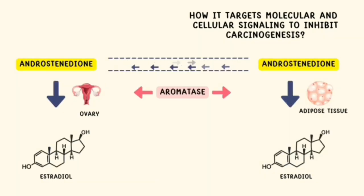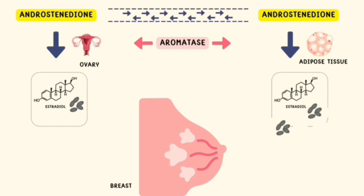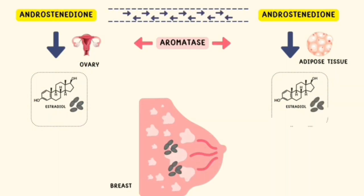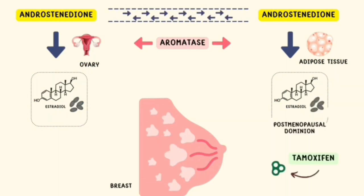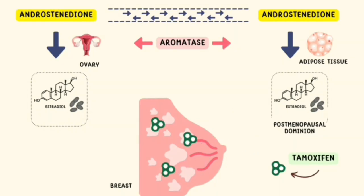Many types of breast cancers are dependent on a constant supply of estrogen for their growth. A family of drugs called the selective estrogen receptor modulators, such as tamoxifen, antagonizes estrogen at its binding sites in the breast, therefore inhibiting the growth of the tumor cells.